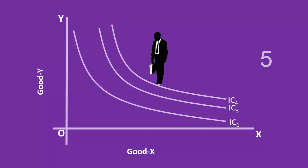An IC that lies to the right of a given indifference curve represents higher level of satisfaction. IC3 gives more satisfaction than IC2.